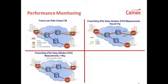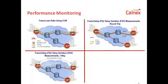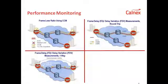We can also calculate frame delay and delay variation, both for round trip as well as one way. The round trip mechanism works by way of a delay measurement message. A delay measurement message is sent out with a timestamp and the response is then sent back and timestamped. By measuring the transmit time of the delay measurement message and the receive time of the delay measurement response, we can calculate the round trip delay and therefore the round trip delay variation as well. Delay and delay variation performance can be monitored using the DMM and DMR messages.